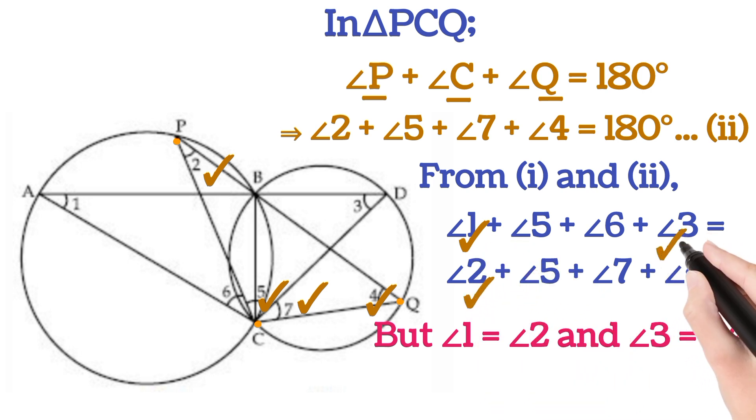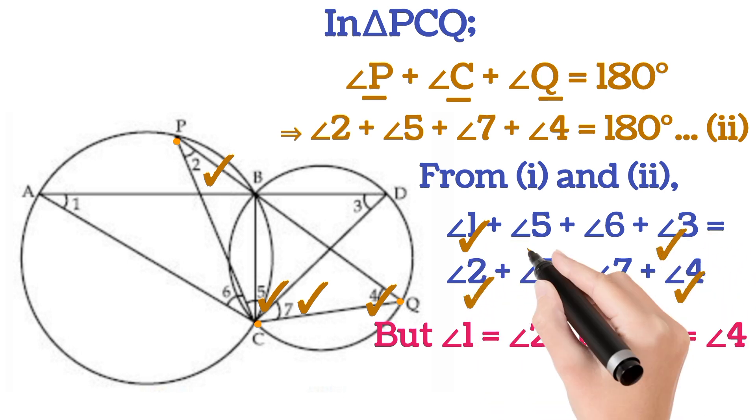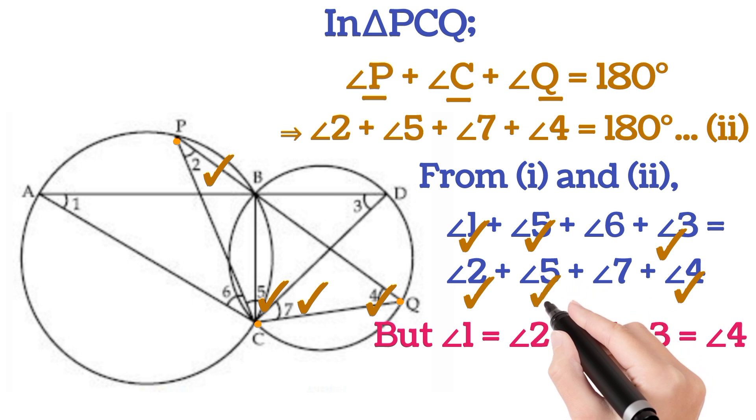1 is equal to 2, 3 is equal to 4, 5 is obviously equal to 5. So from this we will get angle 6 is equal to angle 7.